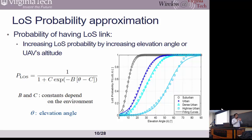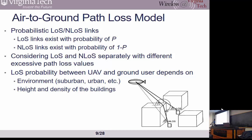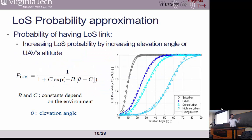An audience member asked whether altitude should appear explicitly in the formula. The speaker explained that the elevation angle inherently contains altitude, since the elevation angle is the inverse tangent of altitude divided by horizontal distance. So if we go up, we increase the elevation angle, which increases the line-of-sight probability. The probability depends not only on altitude but also on the horizontal distance.